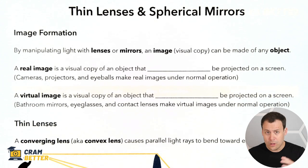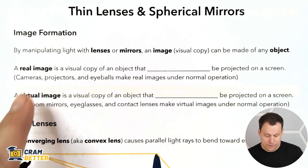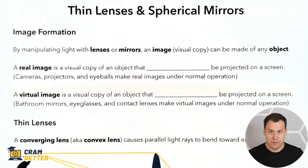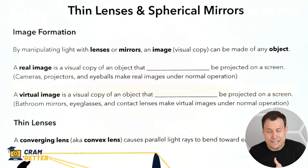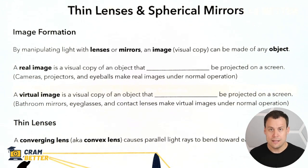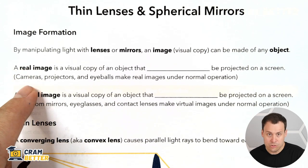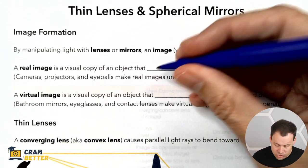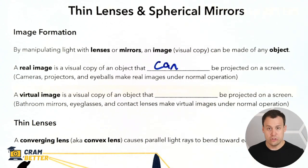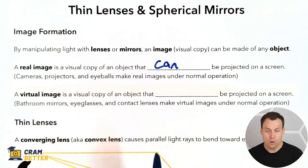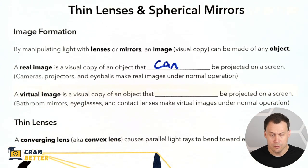Thin lenses and spherical mirrors — the whole idea here is creating images. For example, if you have a camera, you're taking a picture of something. That thing is your object, and then you have a lens in your camera that makes an image, projecting it onto a piece of film or a digital sensor. A real image created by a camera is an image that can be projected onto a screen. It's not just cameras — all kinds of other stuff makes real images too.